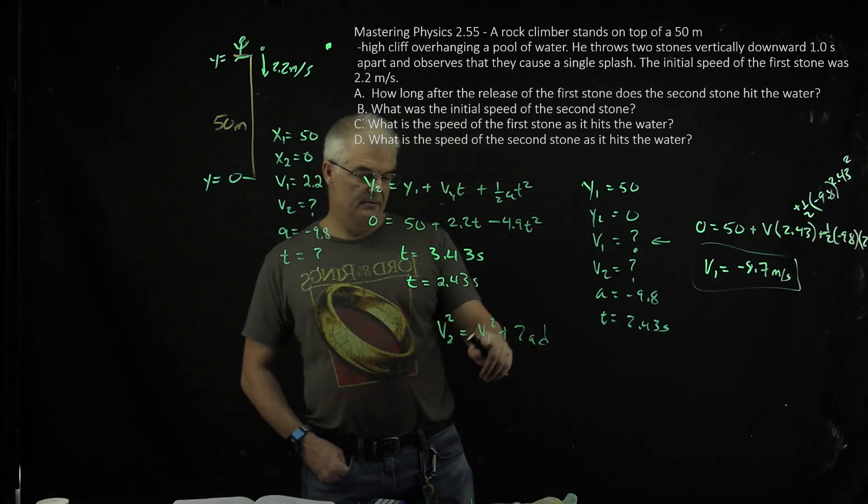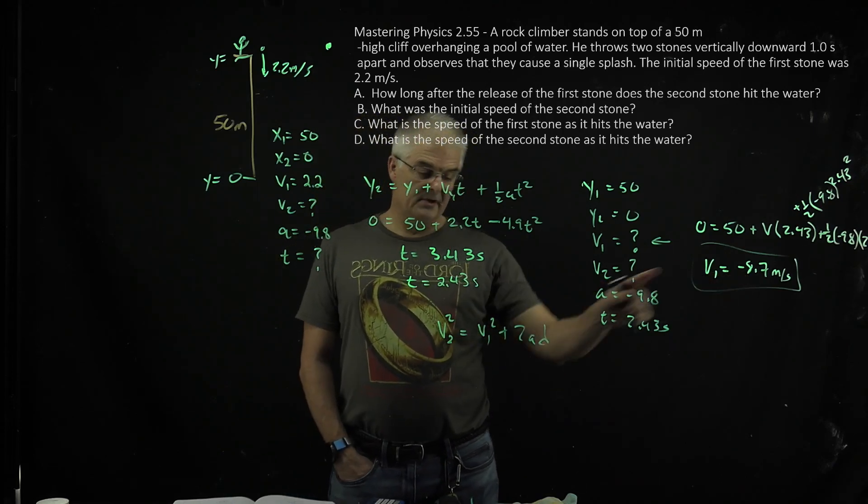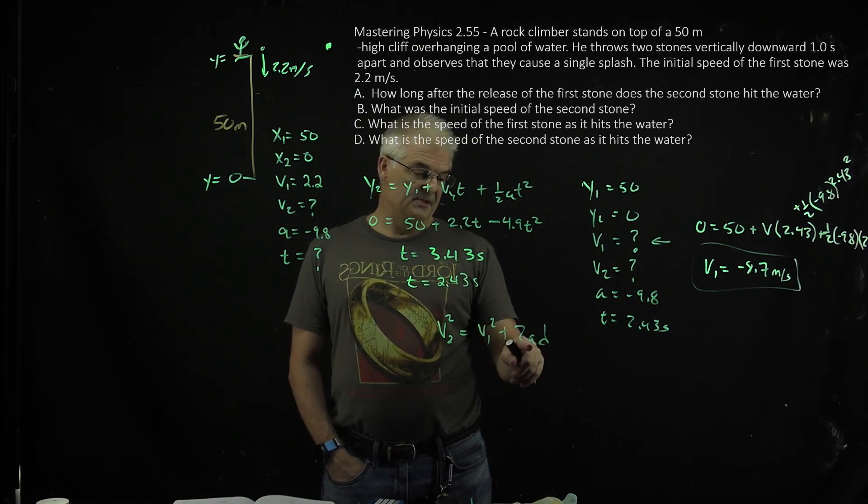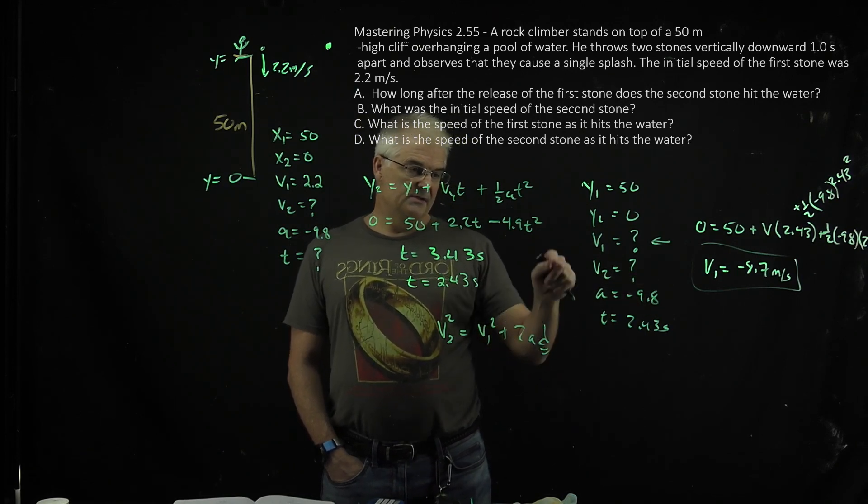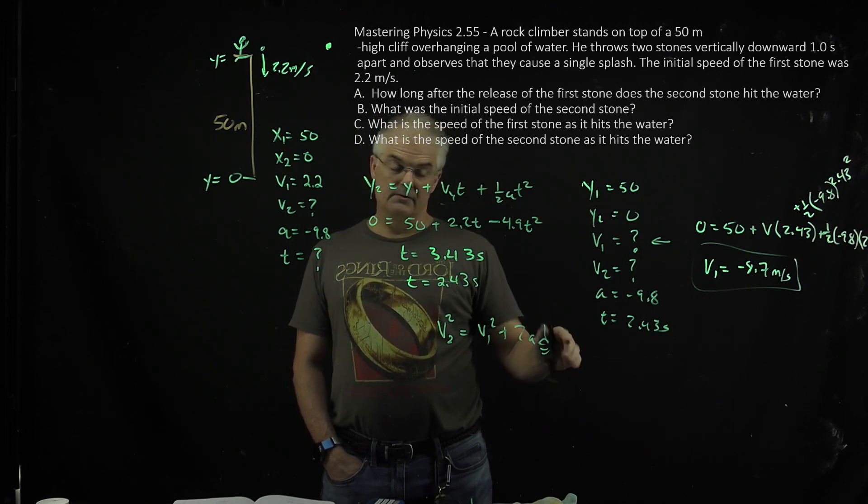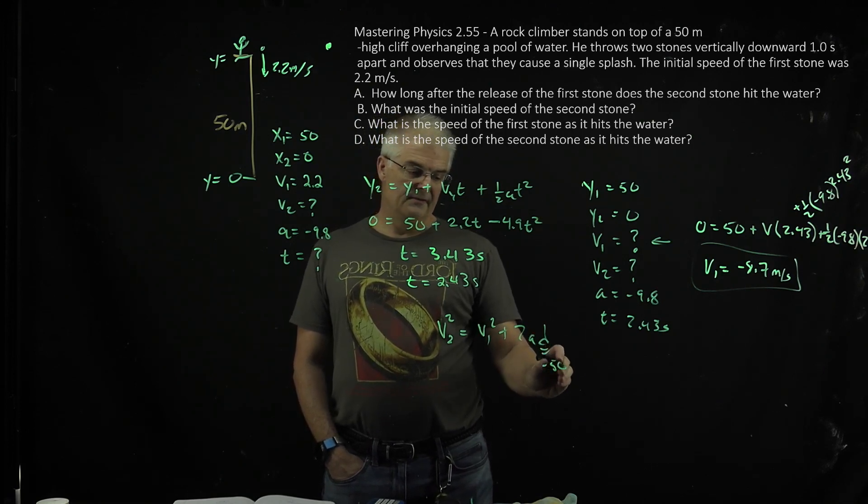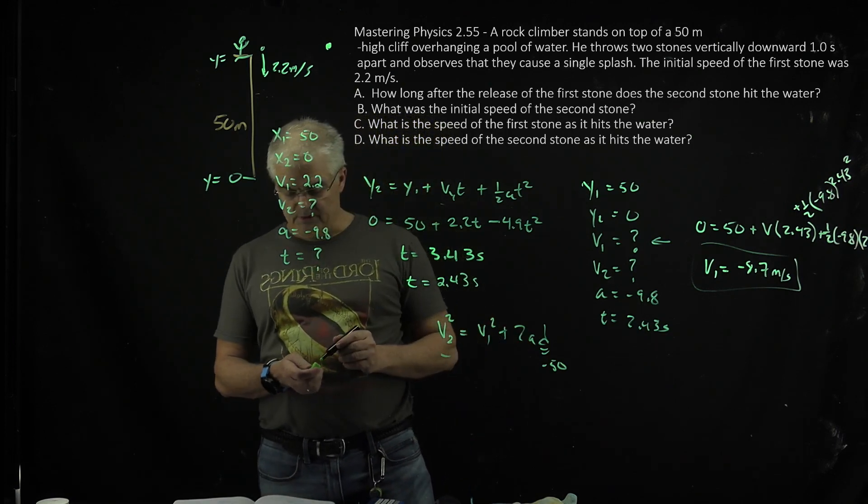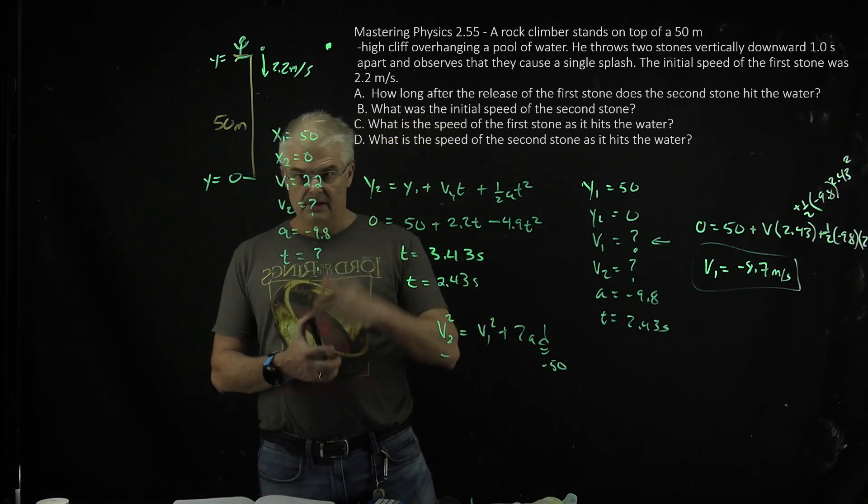Then what you can do simply is do v2 equals, v2 squared equals v1 squared plus 2ad. And you know v1 squared, this is this number, negative 8.7 squared, plus 2 times a times d. Now watch this, the d is going to be, you're going from 50 to 0, so this will be negative 50. And then you'll solve for v2. Watch it, there'll be a square root problem when you're solving that problem. That's how you do question C.